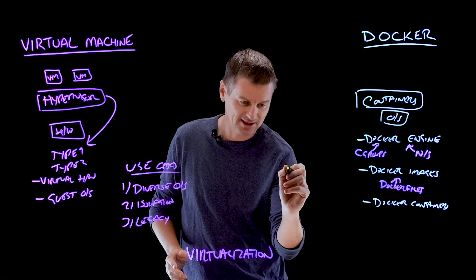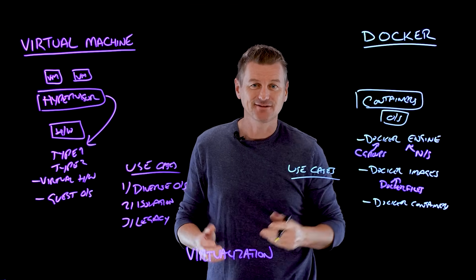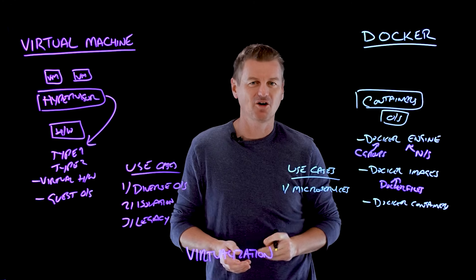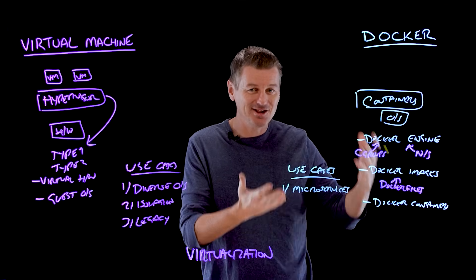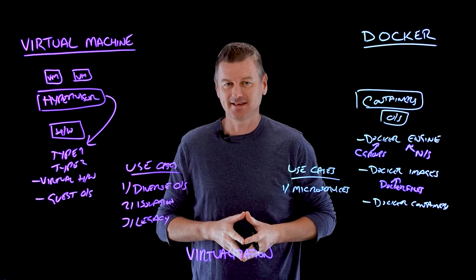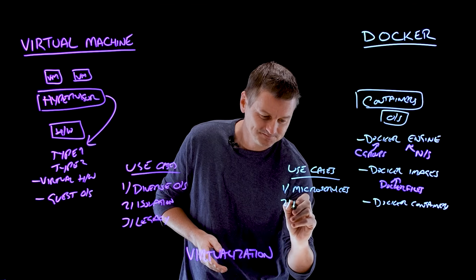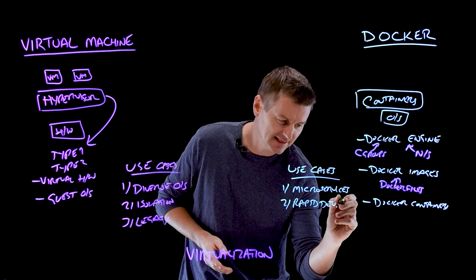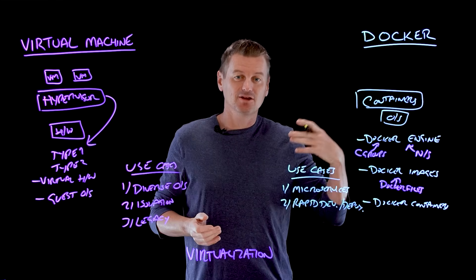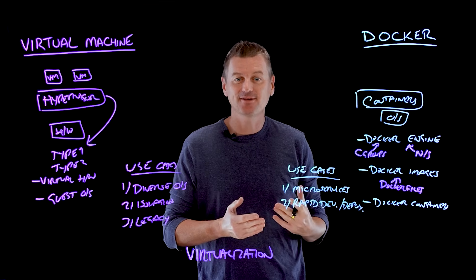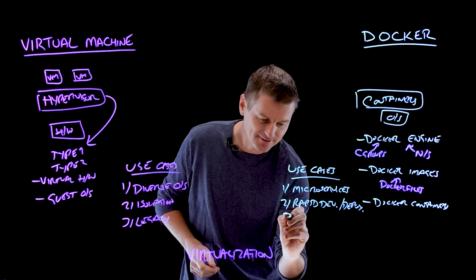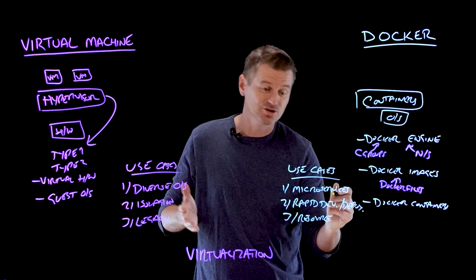What about Docker containers? First and foremost, top of the list is microservices — probably the most common use for containers. Docker's lightweight nature, its fast startup times, and its ability to package and distribute dependencies make it ideal for managing microservices-based applications. Number two is speed — rapid development and deployment. We can quickly build, deploy, and scale up containers, making them well-suited for agile development practices and CI/CD pipelines.